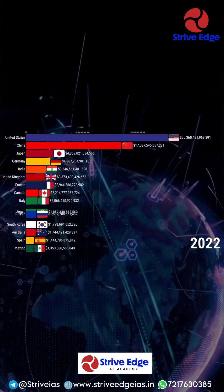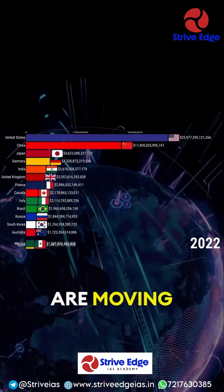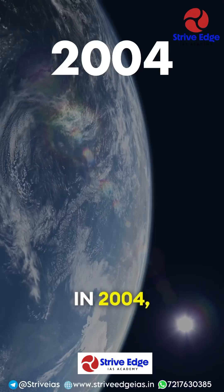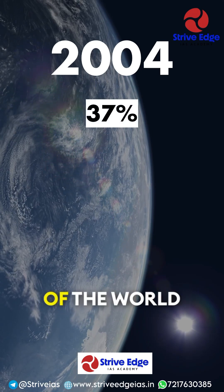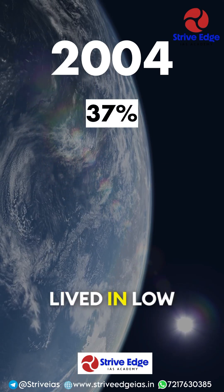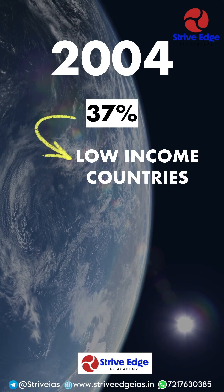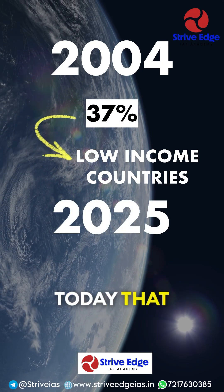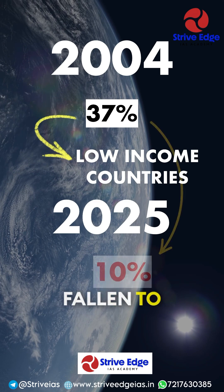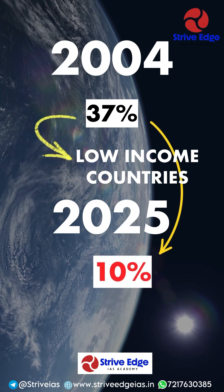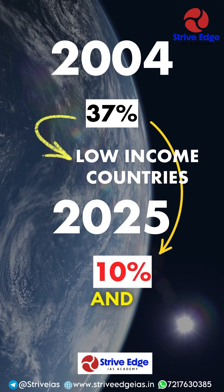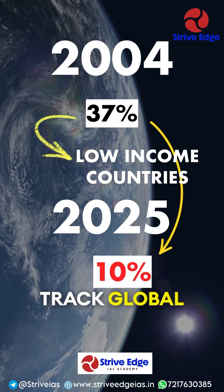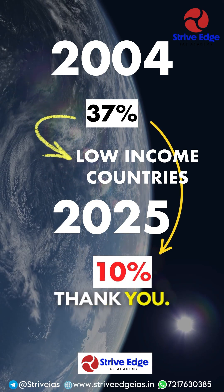Over time, though, most countries are moving up. In 2004, 37% of the world lived in low income countries. Today, that number has fallen to less than 10%. This system helps policymakers and researchers track global progress in real economic terms.